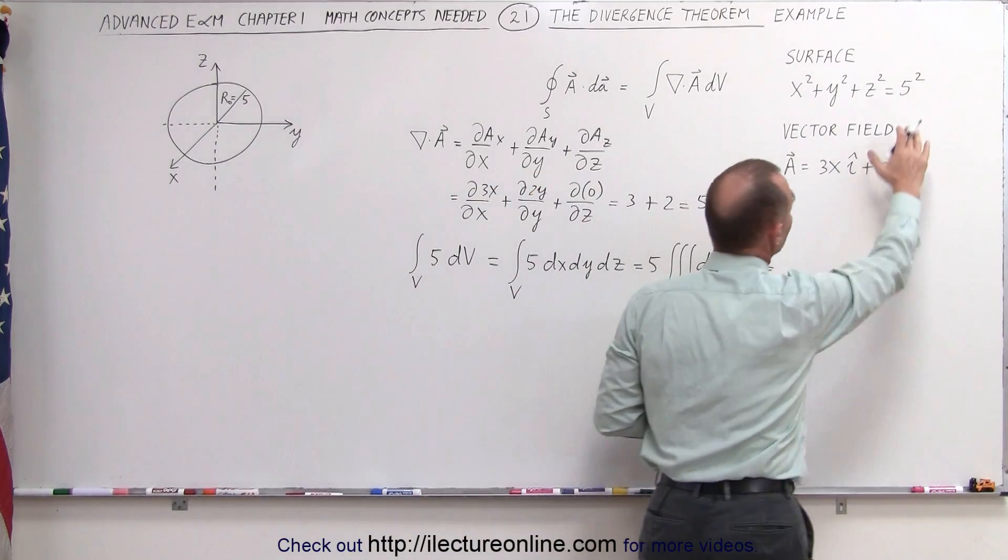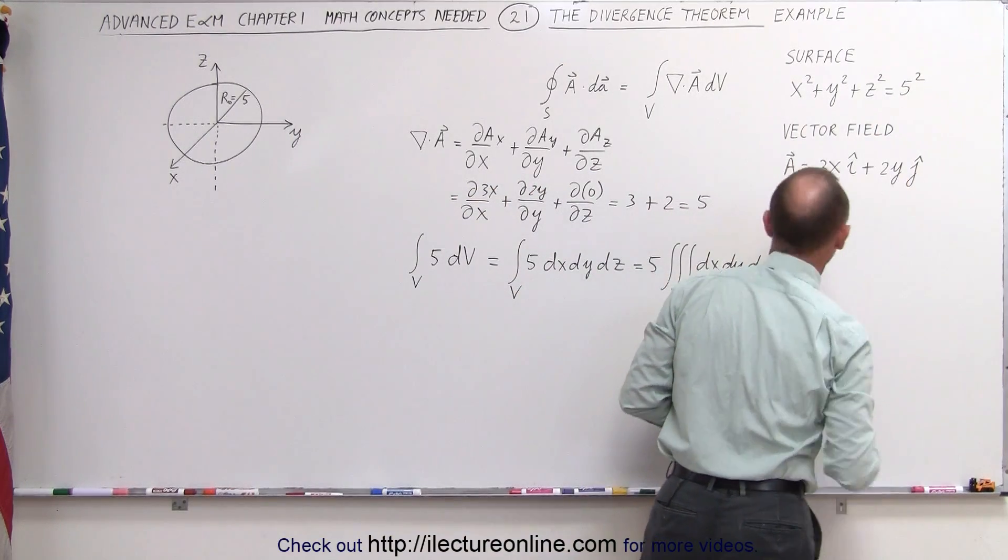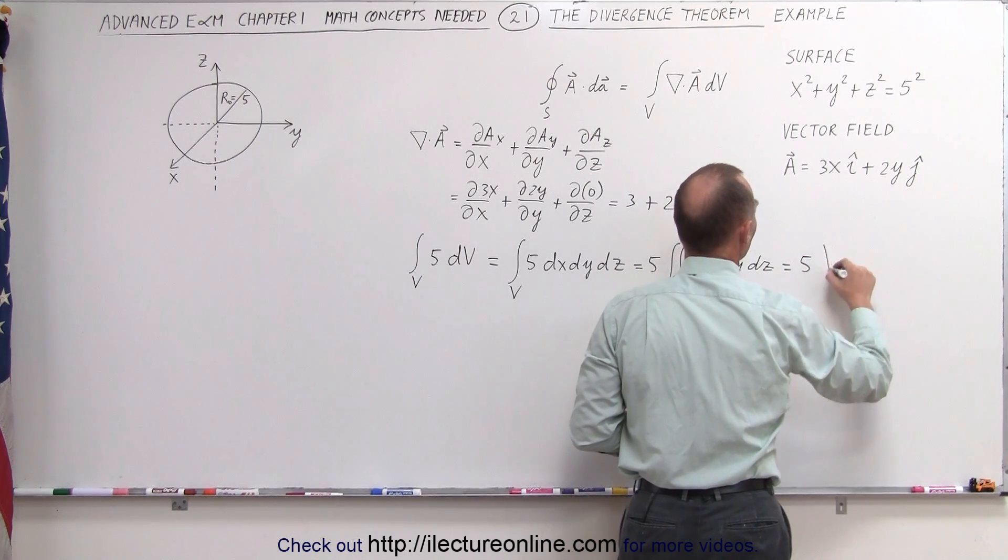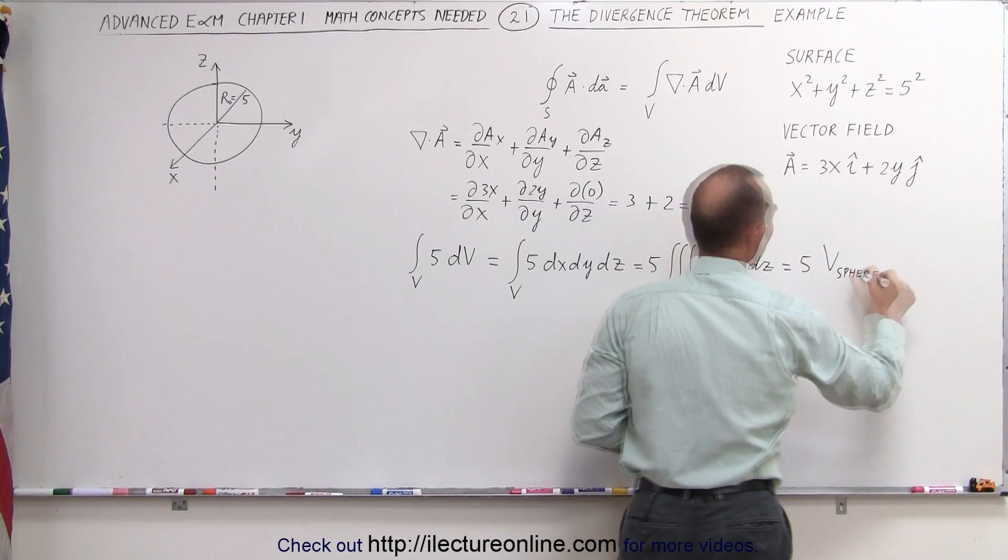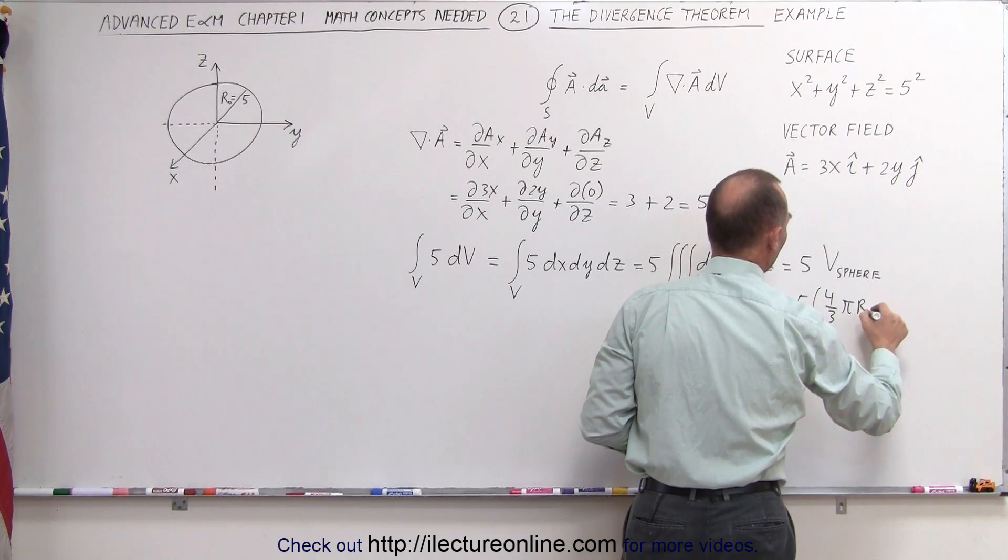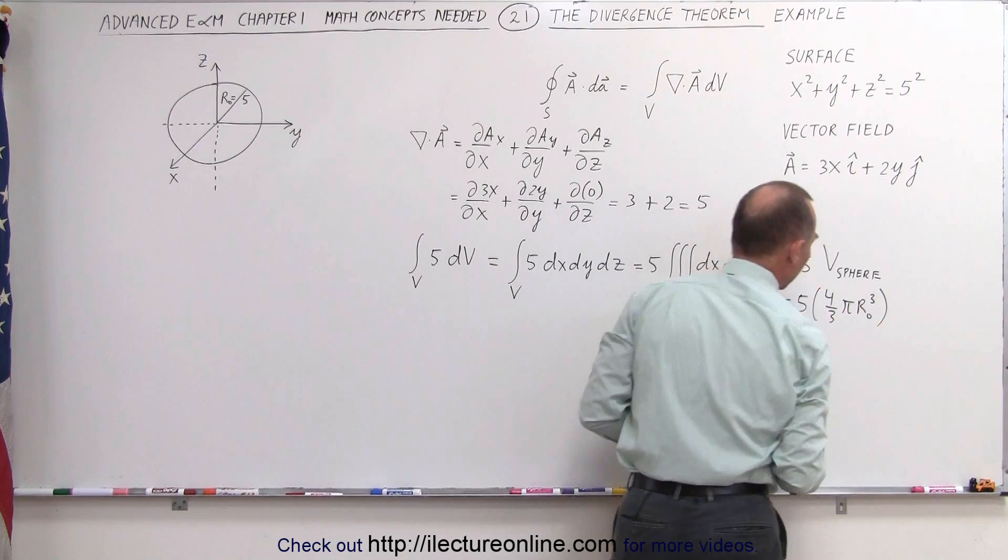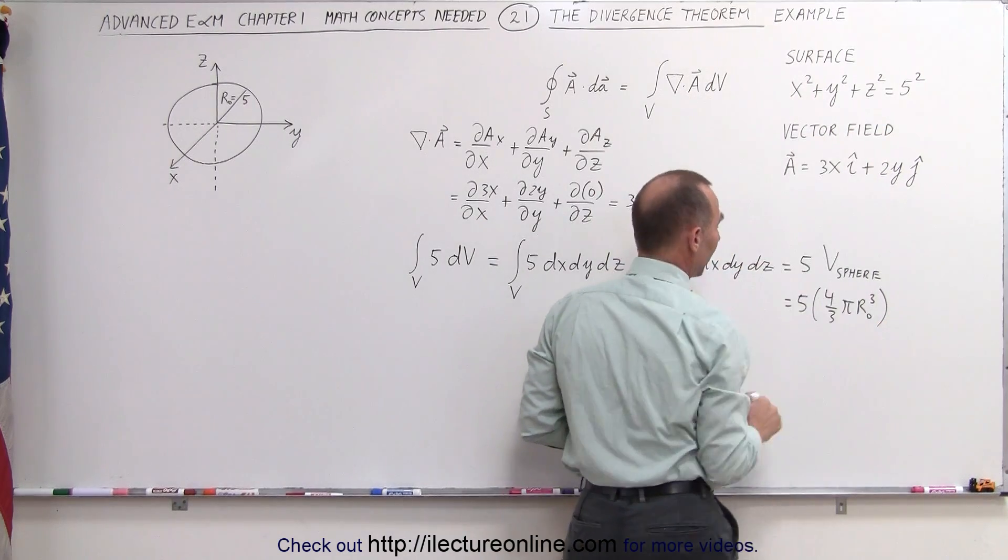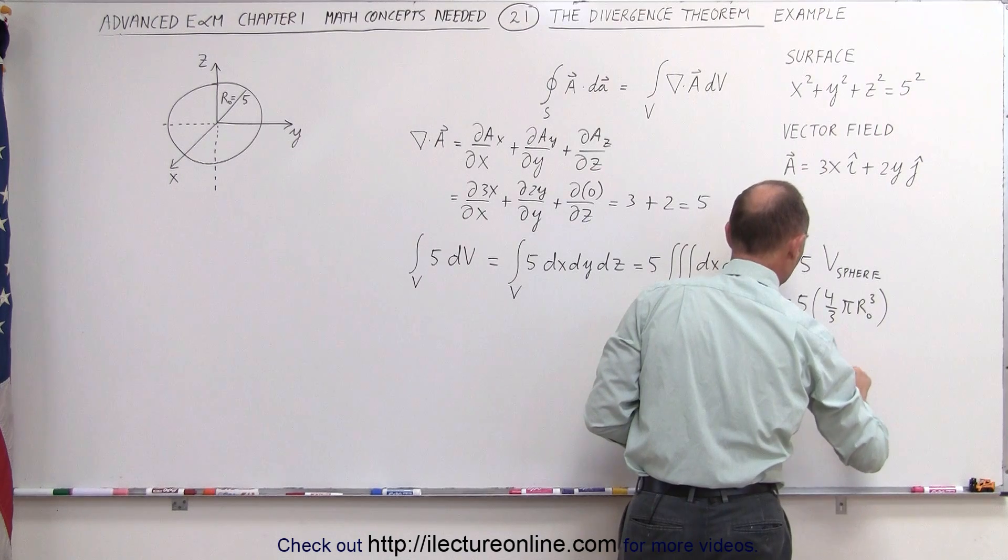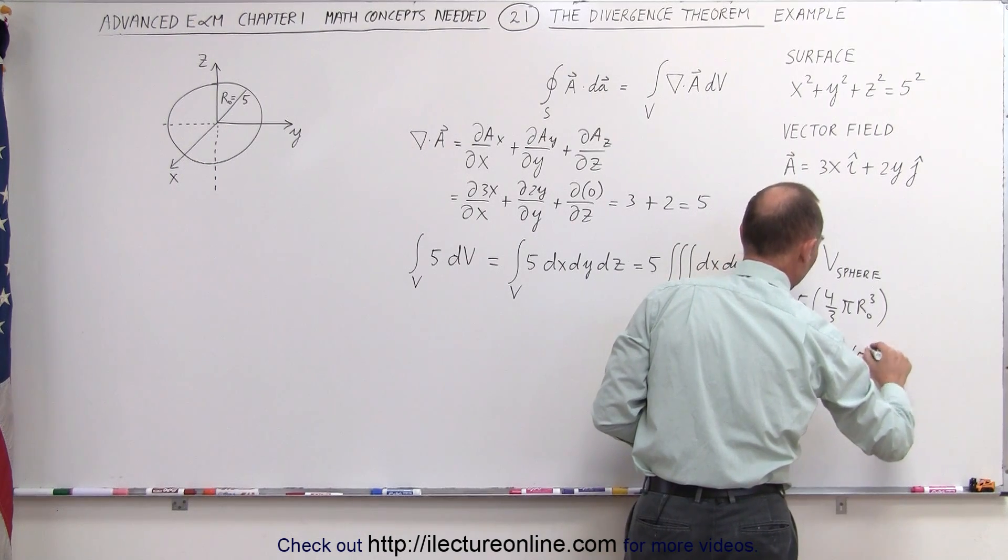And we know that the volume of the sphere can be defined by the radius, which is equal to 5, which means that this is equal to 5 times the volume of the sphere, which is equal to 5 times 4 thirds pi r naught cubed. And then we know that the radius is equal to 5, which means that this is equal to 5 times 4 thirds pi times 5 cubed.